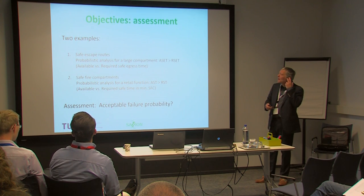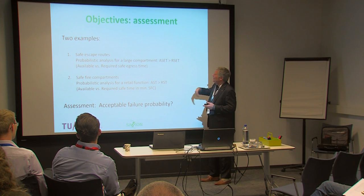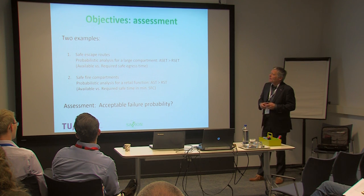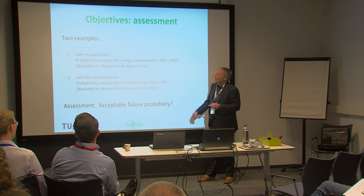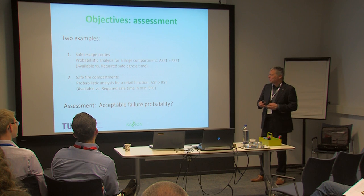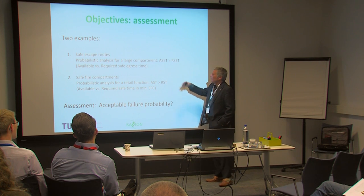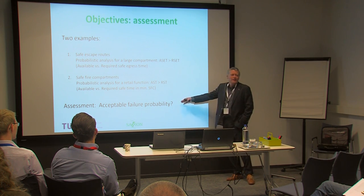I have two examples. We are used to comparing ASET versus RSET — available safe egress time versus required safe egress time — for personal safety. But you can do the same for basically any other risk subsystem. When it comes to compartmentation and fire compartments, we can also think in available safe time and required safe time, but then it's not a safe egress time — it's a level of reliability. The assessment is: what interval do we need to have an acceptable failure probability? That's a difficult discussion because we can't find these answers in building codes.